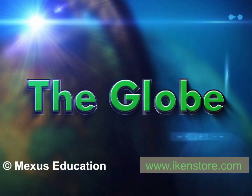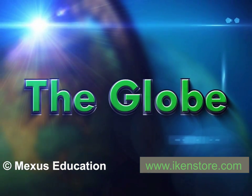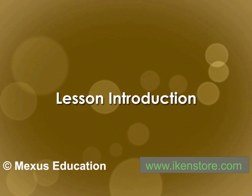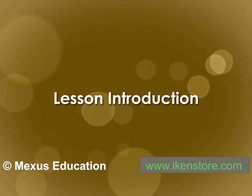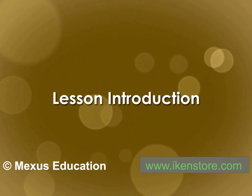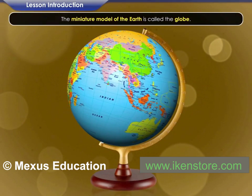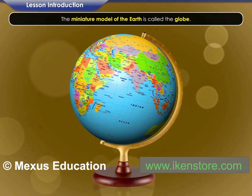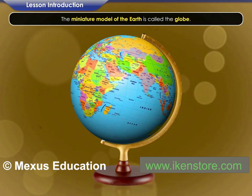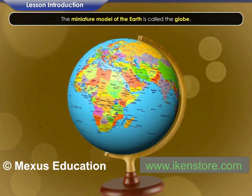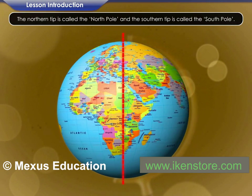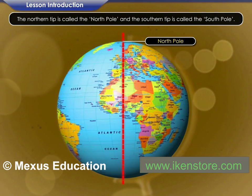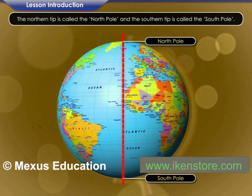The globe. The miniature model of the earth is called the globe. The northern tip is called the North Pole and the southern tip is called the South Pole.